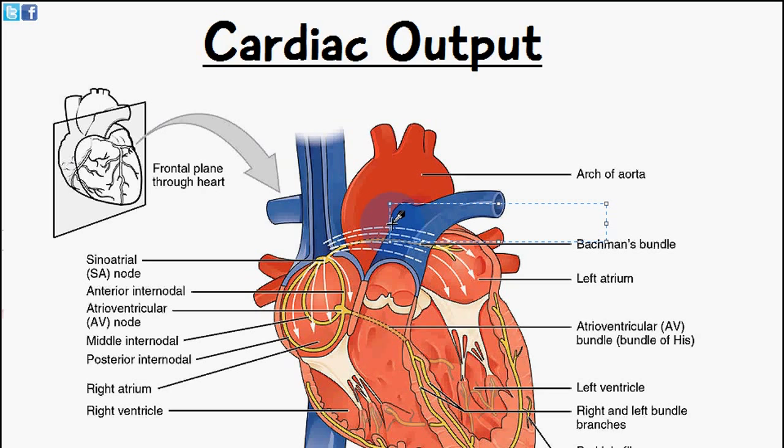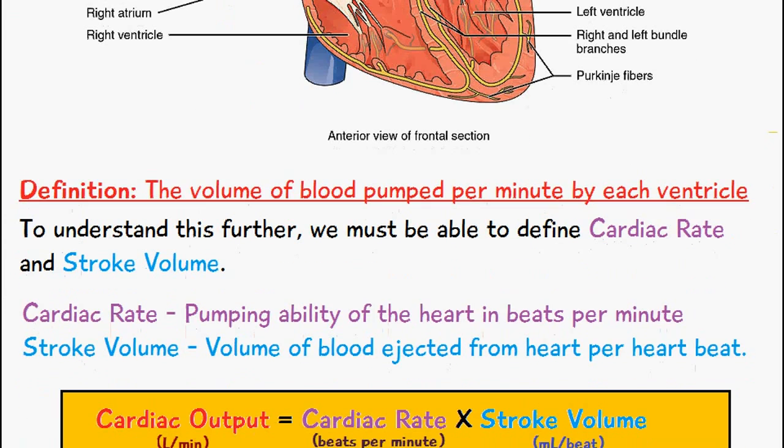Welcome to Five Minute School. In today's video we're going to be discussing cardiac output. The definition of cardiac output is the volume of blood which is pumped per minute by each ventricle. To understand this further, we must first be able to define what cardiac rate and stroke volume are.